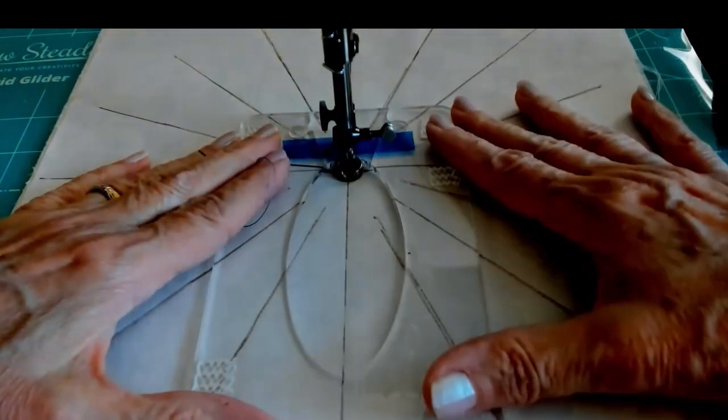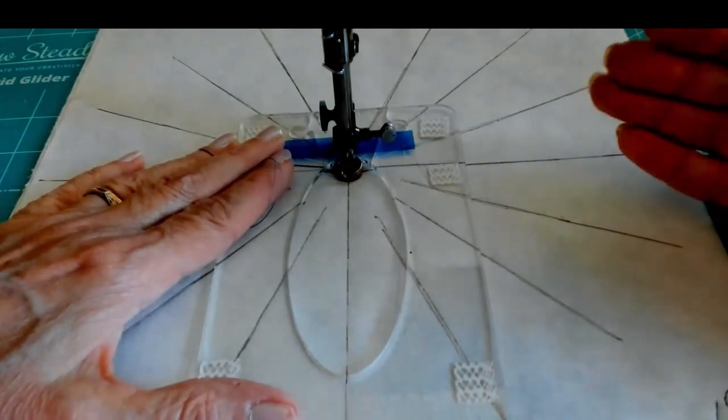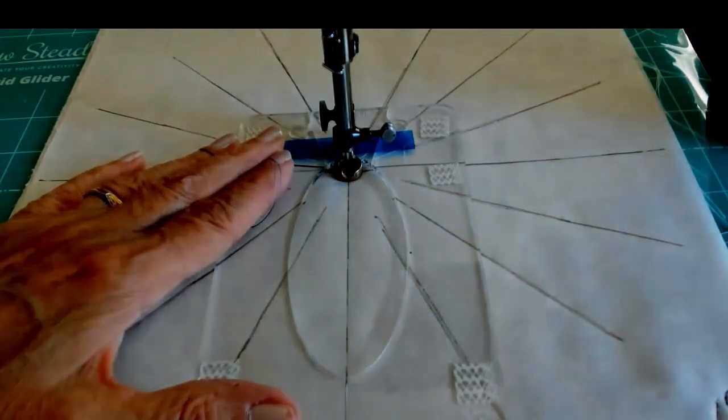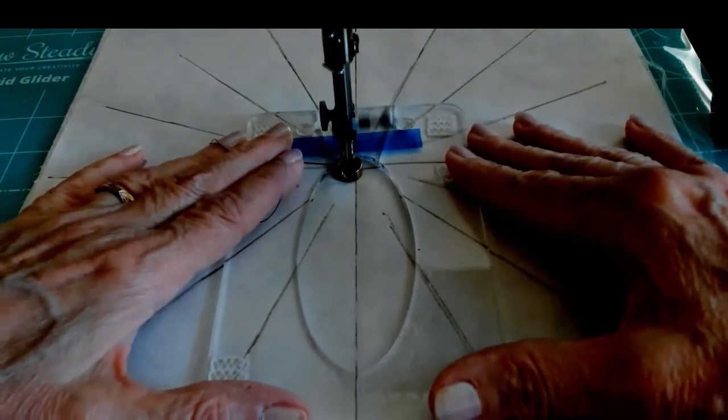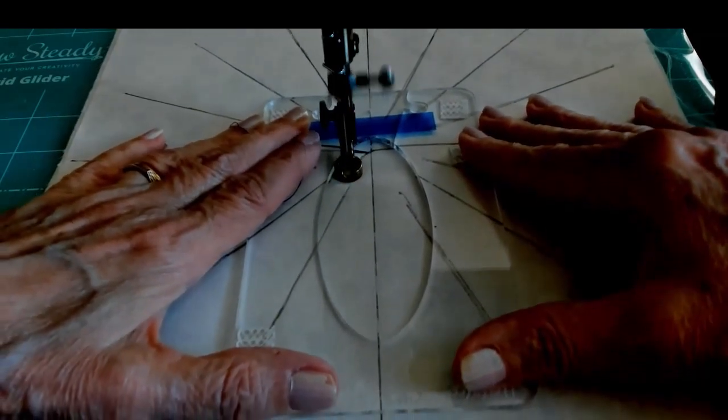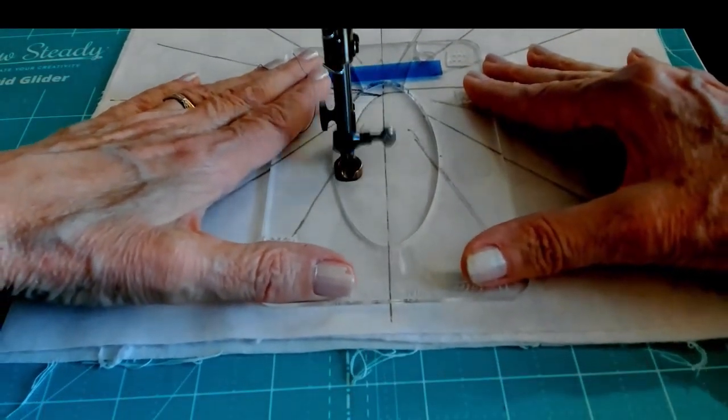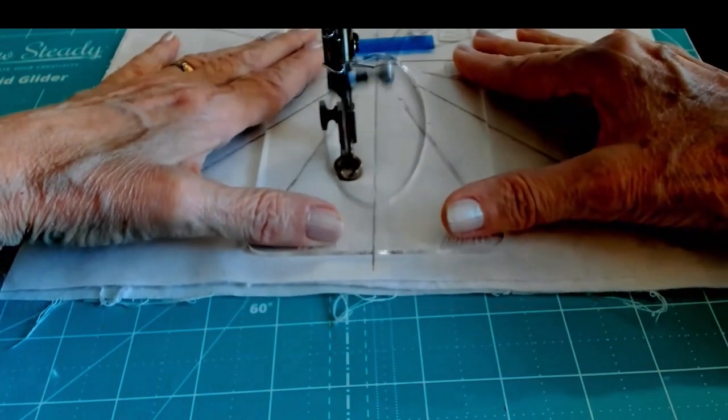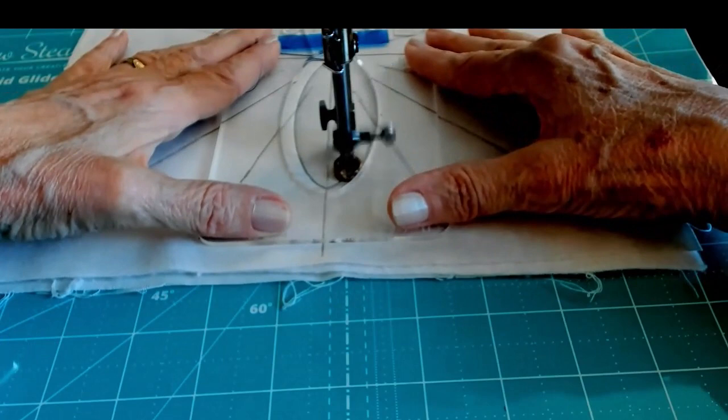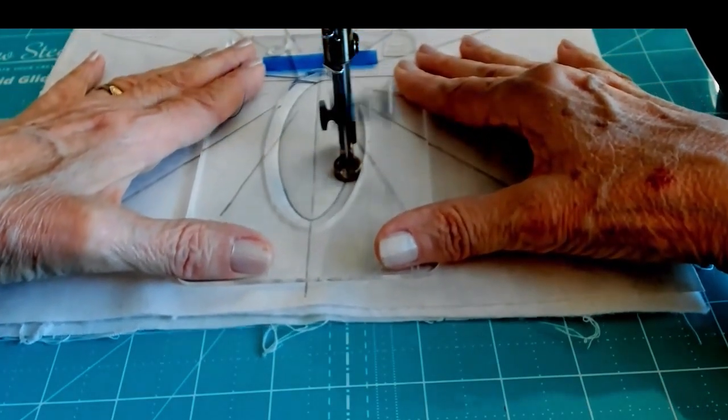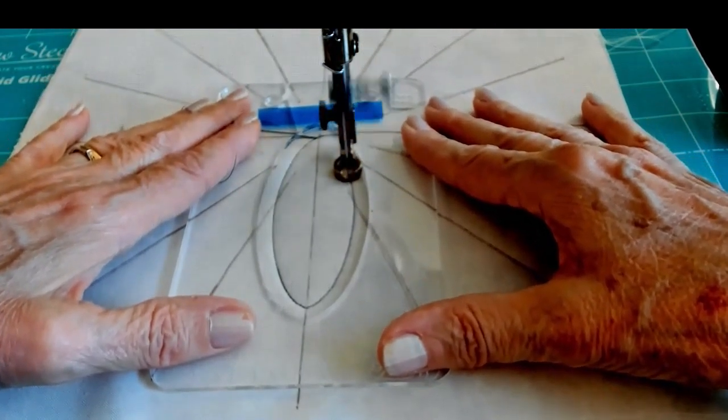I brought my bobbin thread to the top. I'm going to hold those threads back. And the reason I do that is so that I keep the back of my project looking as good as the front of my project and don't end up with any thread nests under there. I like to take nice and slow to start. Just move around.